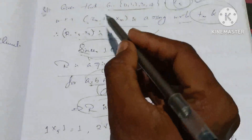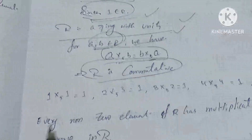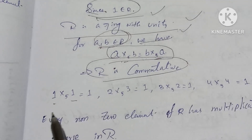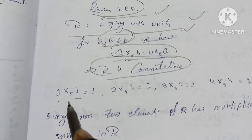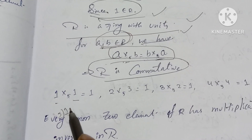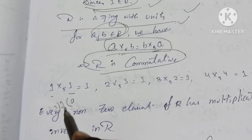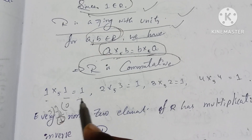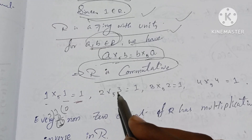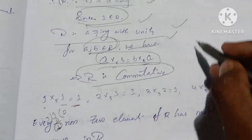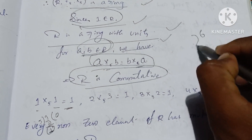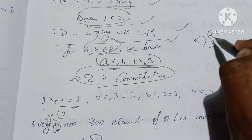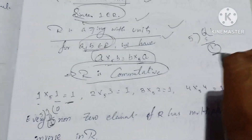Now checking multiplicative inverses for each nonzero element: 1 ×5 1 equals 1 mod 5, remainder 1. Next, 2 ×5 3 equals 6; 6 minus 5 equals 1, remainder 1. Next, 3 ×5 2 equals 6; remainder 1.